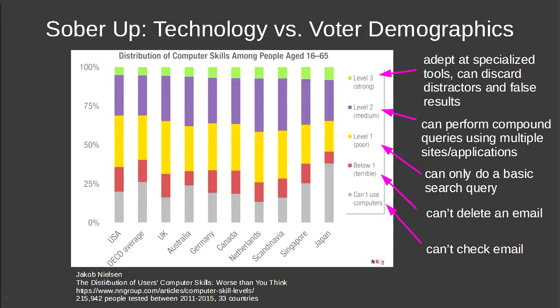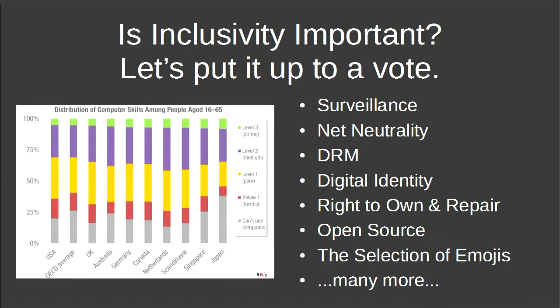If you were to put something in technology up to a vote, the 50% line falls right through people who can basically just type a search query and hit enter. There's a big gap until you get to people who can actually understand an issue well enough to vote on it. So putting surveillance, net neutrality, DRM, digital identity, open source, even emoji selection up to a public vote becomes essentially random.